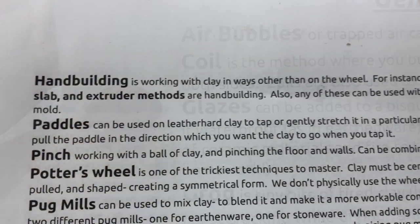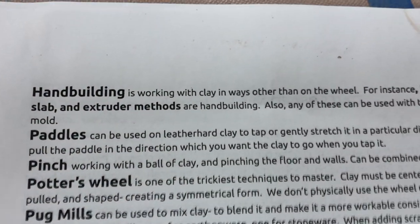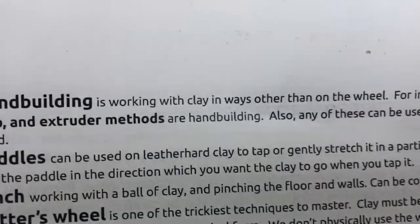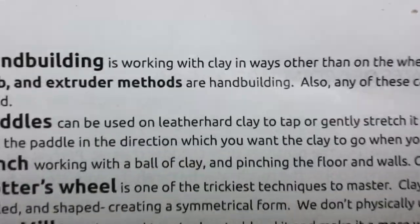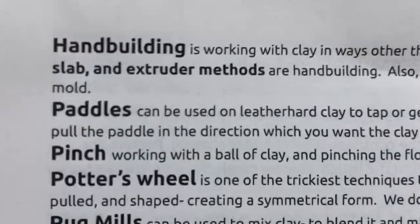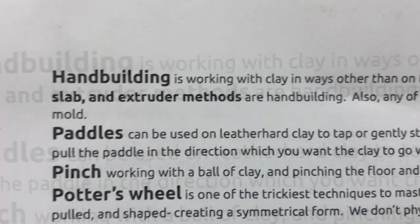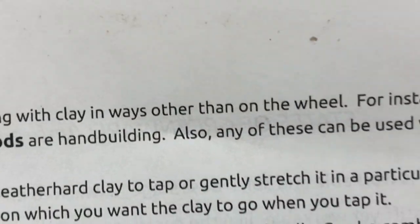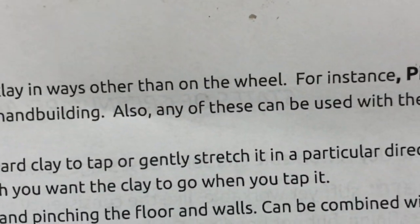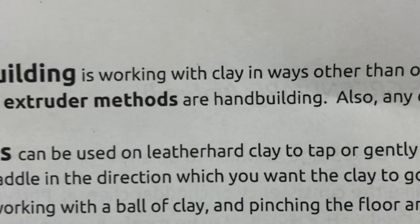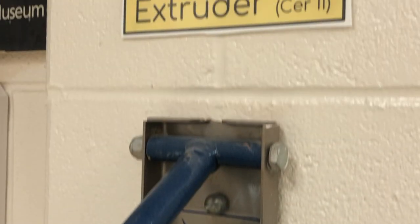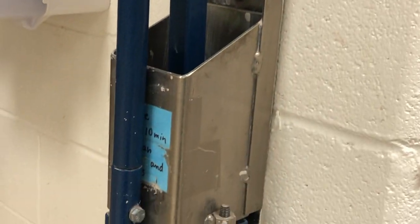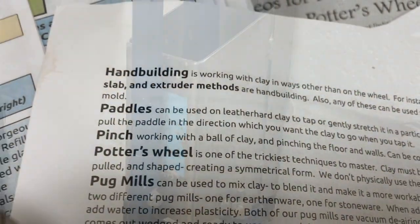Hand building is working with clay in ways other than on the potter's wheel. Pinch, coil, slab, and also the extruder are all methods of hand building. If you take Ceramics 2, you might have the opportunity to use the extruder, which is basically a large coil maker.